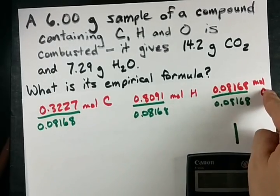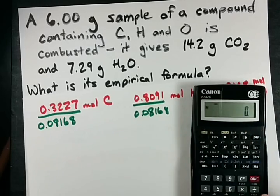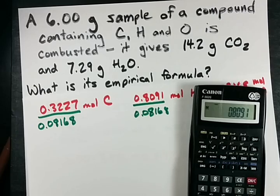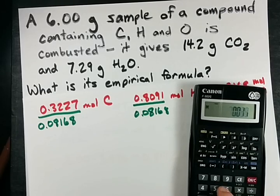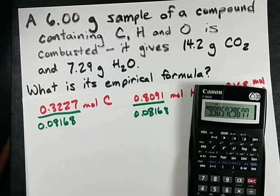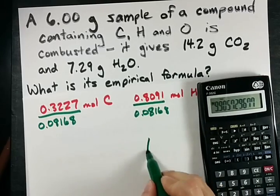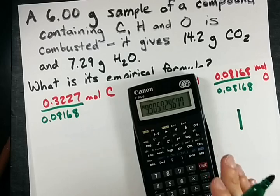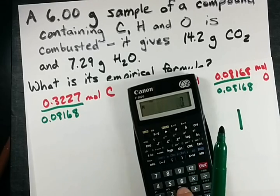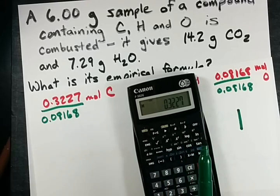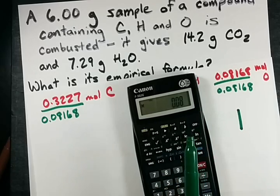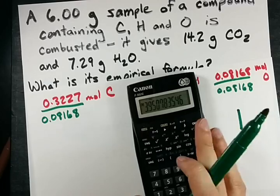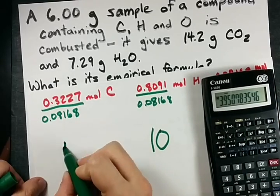Now let's watch the magic happen here. For every one oxygen, I get 0.8091 divided by 0.08168, 9.9 or rather about 10 hydrogens. And the number of carbons is 0.3227 divided by 0.08168, 3.95, which is about 4.